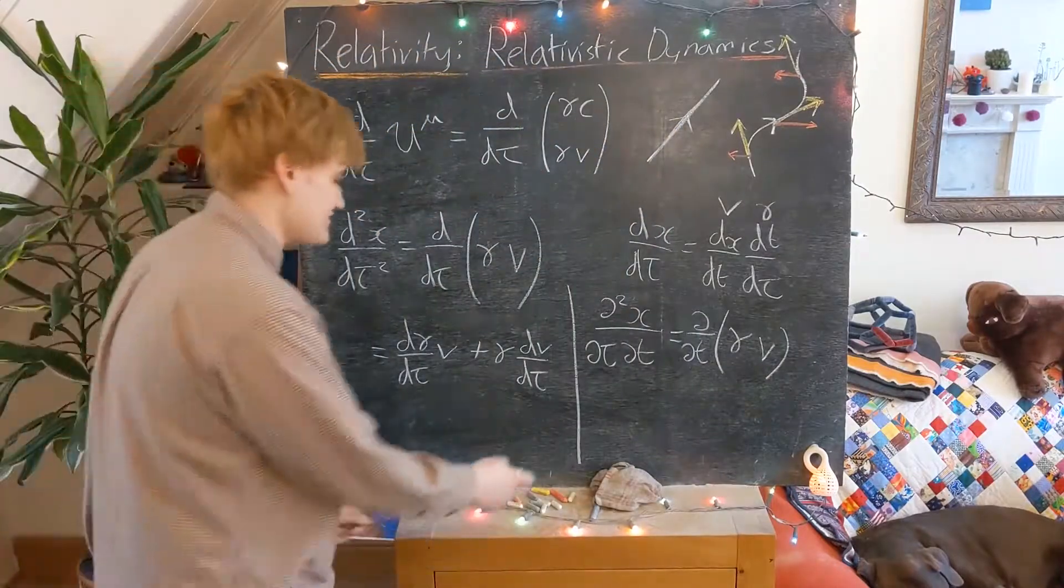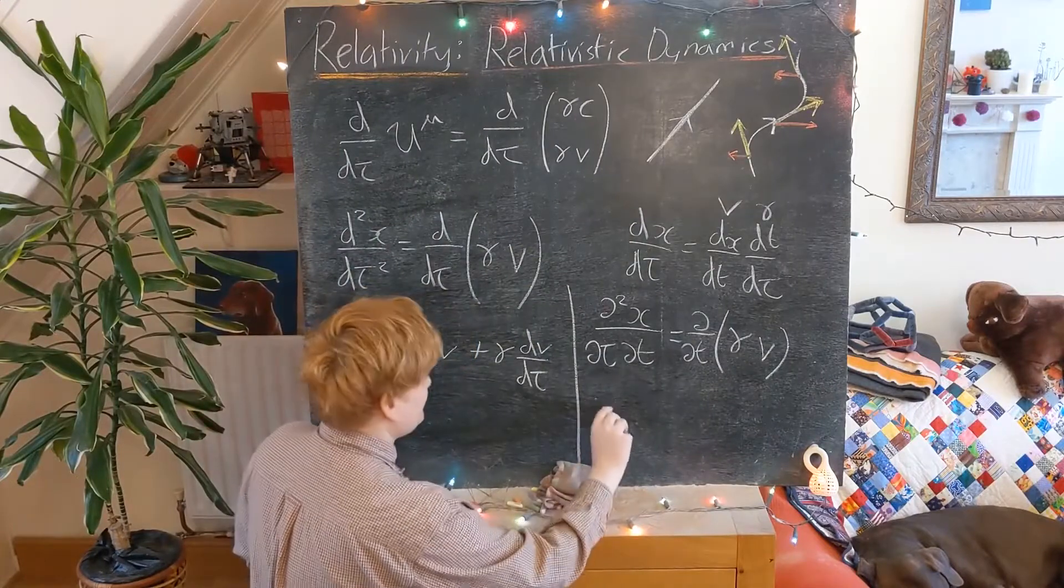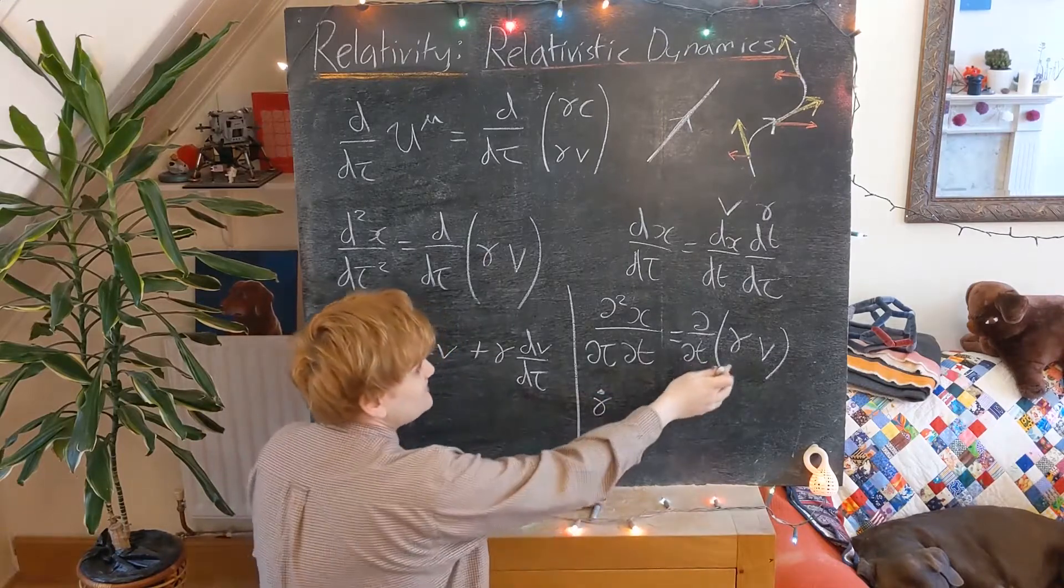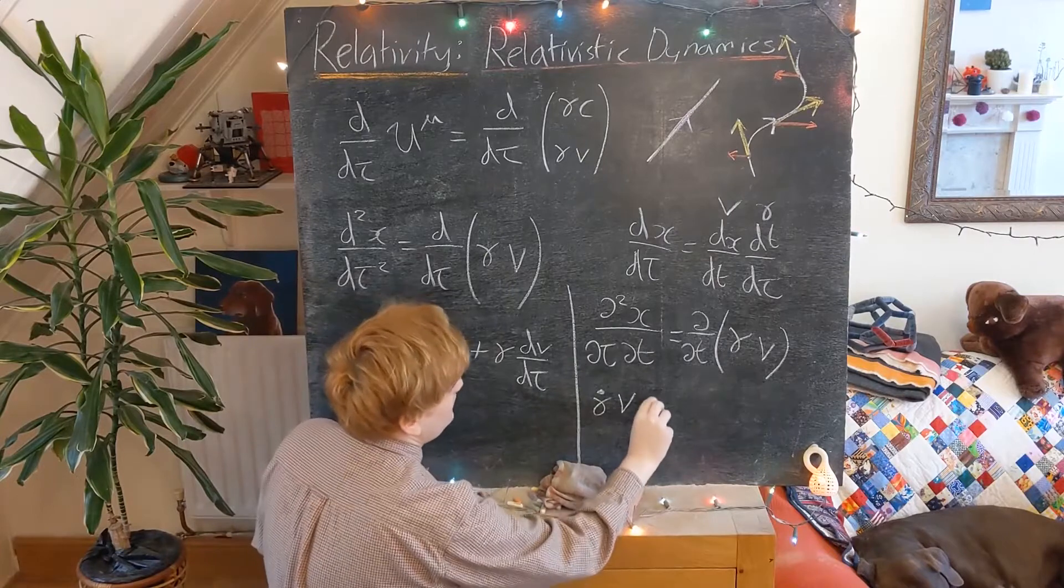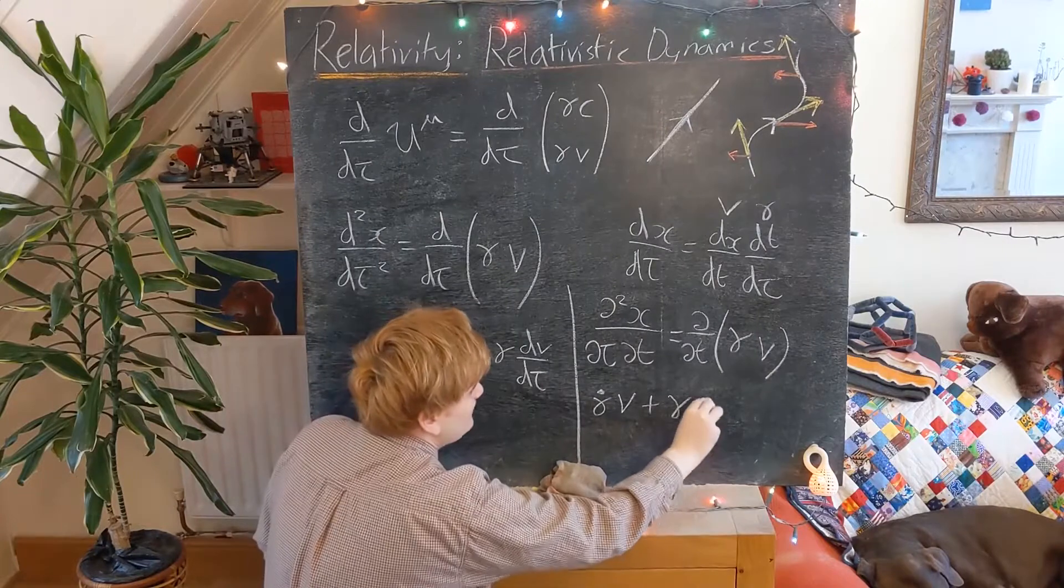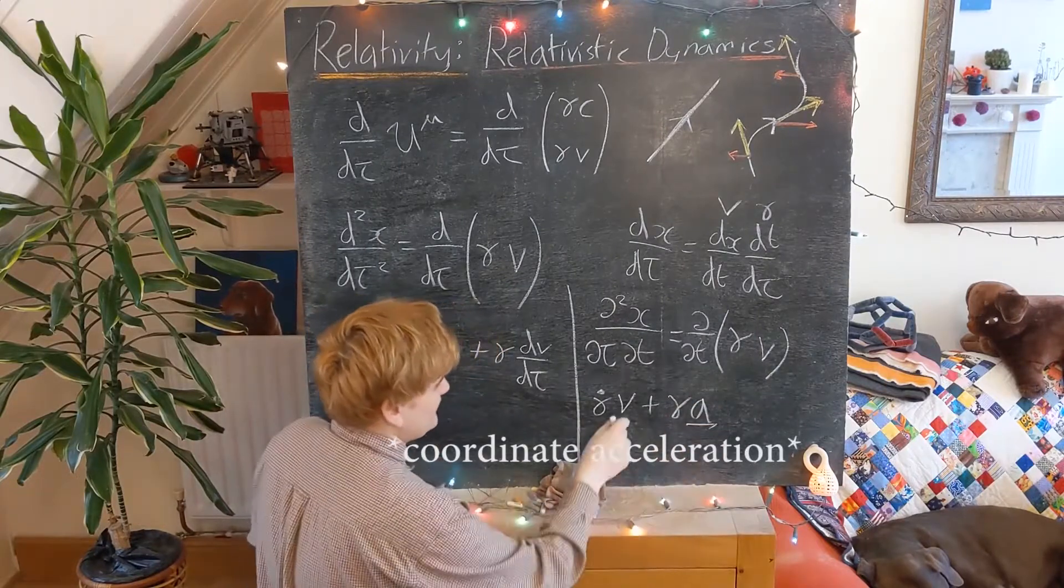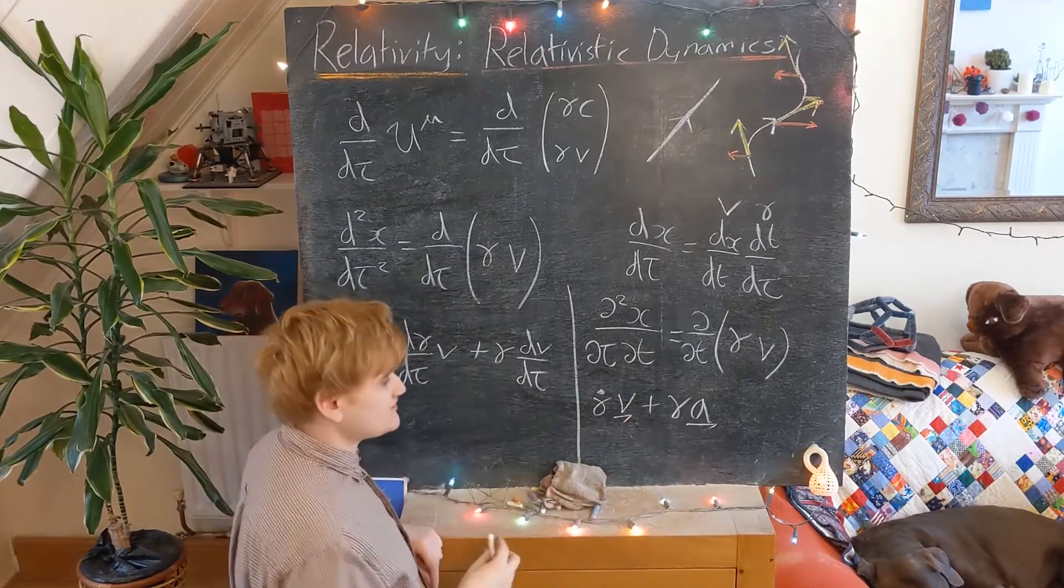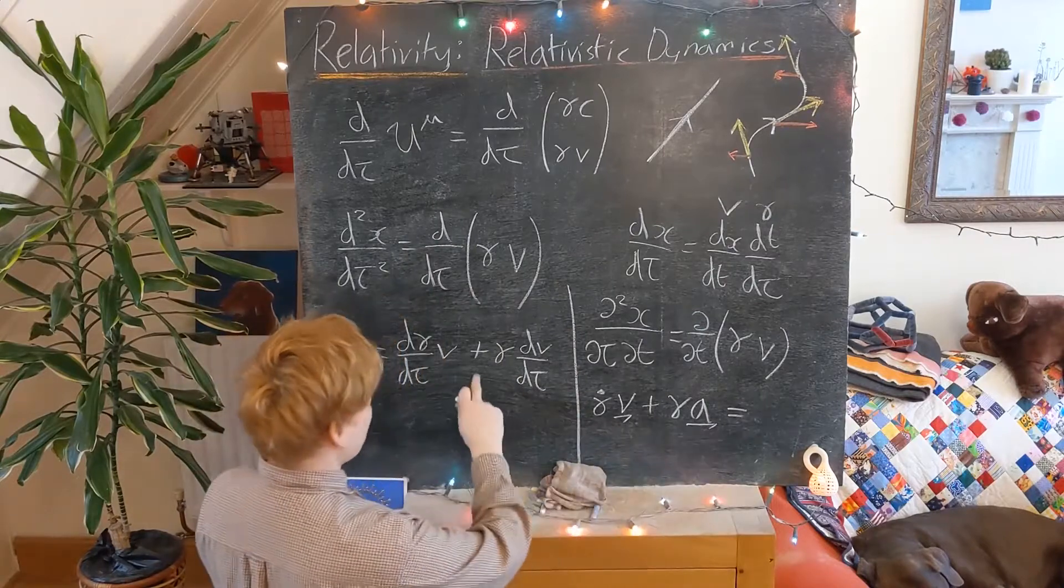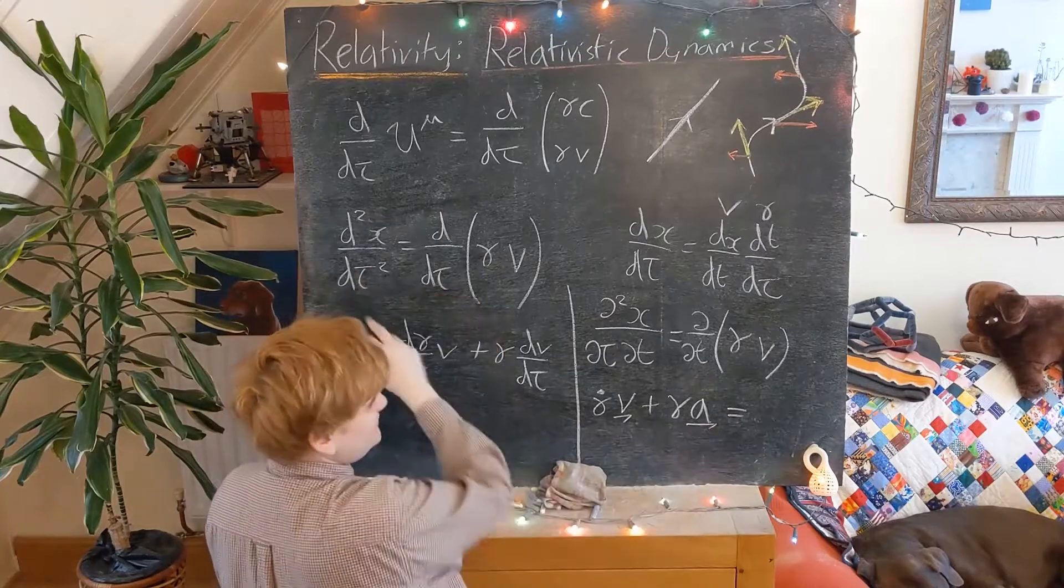And so again, we have to use the product rule. And this is just going to now give us something which I'm going to give the name gamma dot, just to represent this t derivative. And then we're going to have a gamma times now the derivative of v, which we've said is our acceleration. Reminding us that these are vector quantities. And now this is the expression for our, or just for now this piece of our d squared x by d tau derivative.